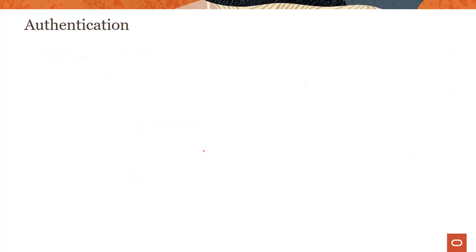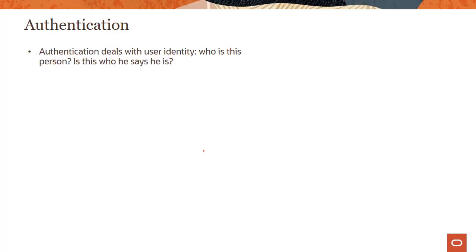Let's talk about the two most common things in any identity solution: authentication and authorization. Authentication basically deals with user identity — it asks who is this person trying to come to your system and authenticate themselves. Is this who she says she is? That is literally what authentication does.